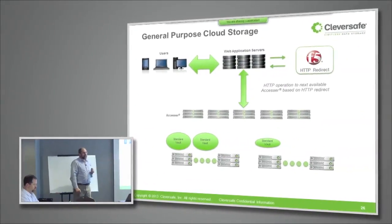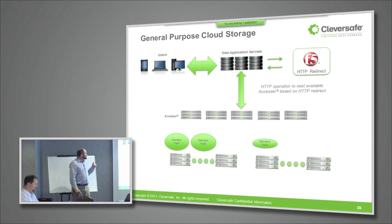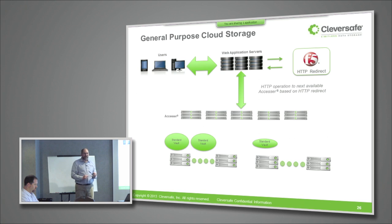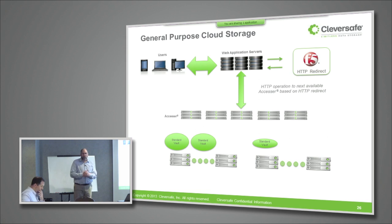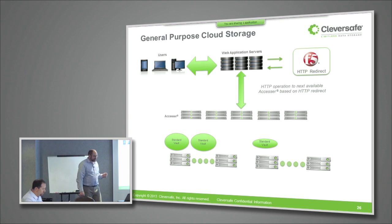This is a pretty general look at what a DSNet deployment at a customer looks like. They've got users; those users are usually interacting with a number of application servers. Those application servers are reading and writing data to the DSNet through the accessors onto all the slice stores, and that data is going into one or more different vaults — these logical containers that exist on the storage pool.